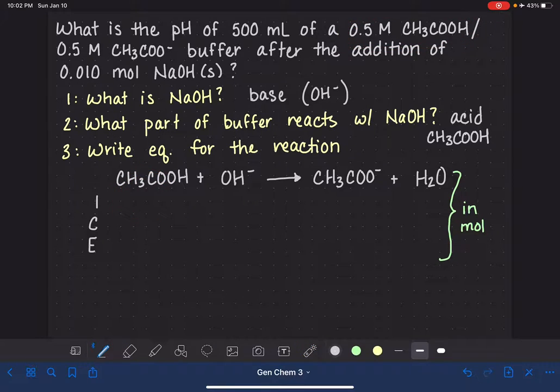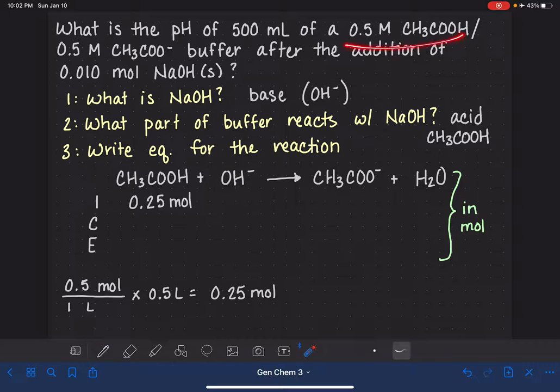So that means we can't just stick 0.5 molar as our initial amount of the CH3COOH. We have to figure out how many moles there actually are. So for the CH3COOH, because it's 0.5 molar, we know that means there's 0.5 moles in every 1 liter. And the problem tells us that we have 500 milliliters or 0.5 liters. And so that means we have 0.25 moles. Our initial amount of the acid is 0.25 moles.